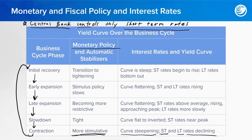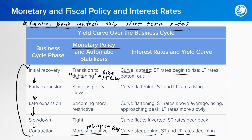After the contraction, we go into the initial recovery phase. This is when the central bank transitions to some level of tightening — raising short-term rates. The yield curve would be at its most steep level, and short-term rates begin to rise while long-term rates bottom out.